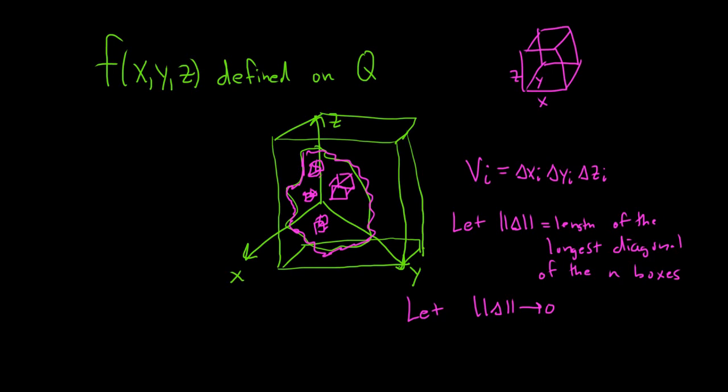And so when you do that, what happens is the triple integral. You call it the triple integral of f over Q, and you write it like this dV. Instead of dA or dx or dy, it's dV.